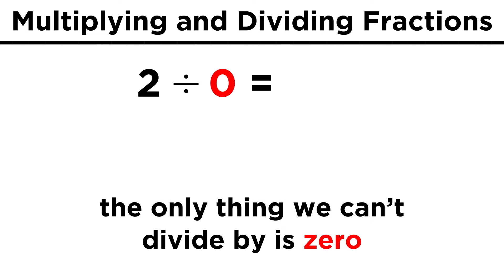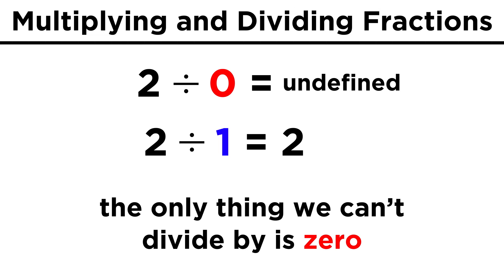The only thing we have to be careful of is that we can't divide by zero. Dividing by zero isn't the same as not dividing something up at all — that's what dividing by one does, because the same number remains. If we divide by zero, the result will be undefined, and this is a fact that will come in handy later in our study of mathematics.